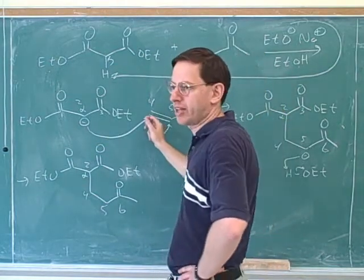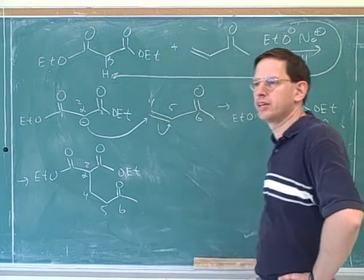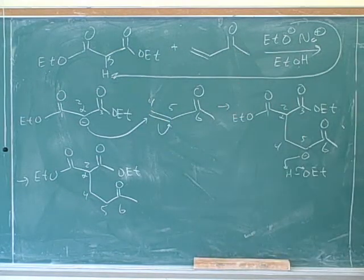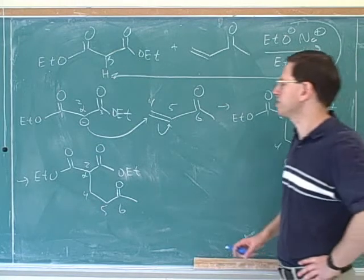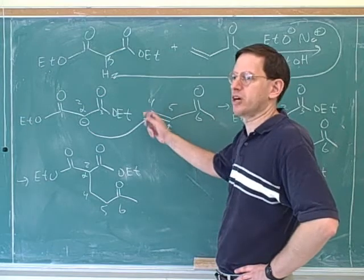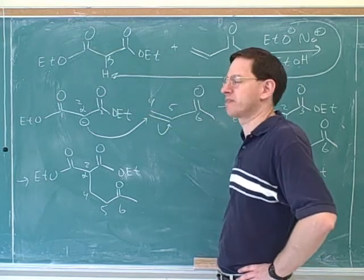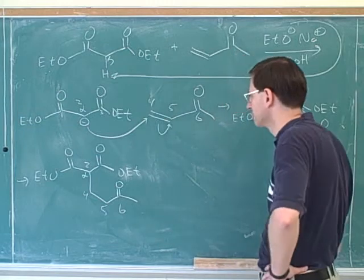Instead, this is going to be our electrophile. Why is number 4 electrophilic? Because of the resonance form that can be formed. There's another resonance structure where number 4 has a positive charge. We don't need to bother drawing that, but we should know in the back of our mind that there's a reason why this attack is happening.